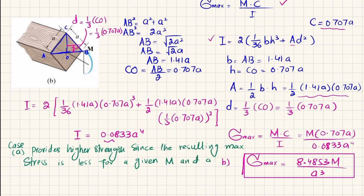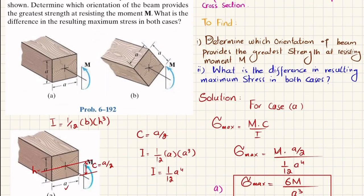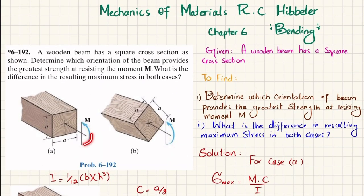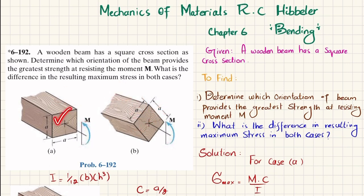Both orientations are subjected to the same moment M and have the same dimension A. The maximum bending stress in case A is less than in case B, meaning case A resists the moment more effectively and provides greater strength.